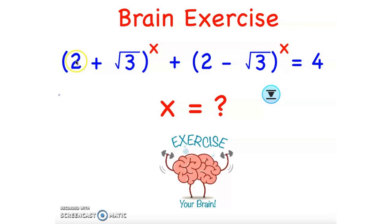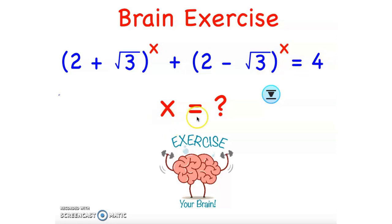Welcome to SuperEasyMap. Take a look at this equation: (2 + √3)^x + (2 − √3)^x = 4. We need to find x. Please follow the video and give it a try.